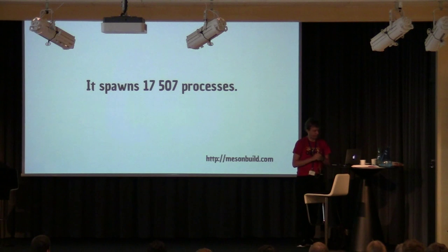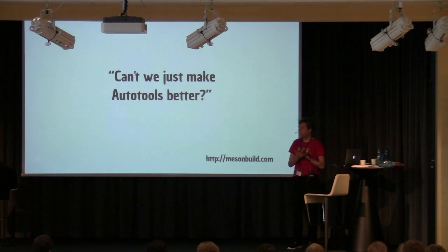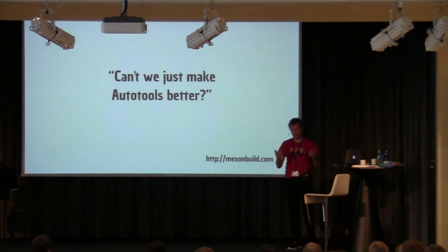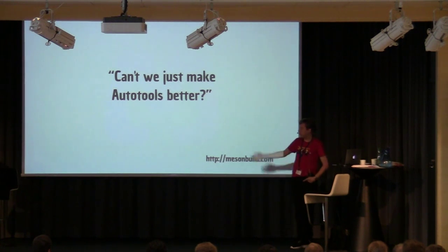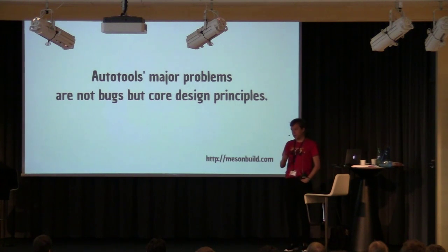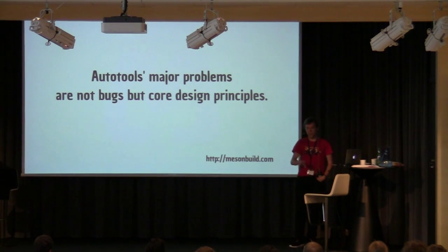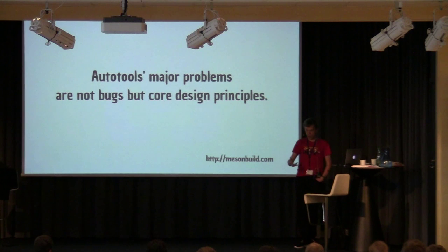As we all know, Unix processes are cheap. The second question is, could we make AutoTools better? There's been lots of time, energy, and effort spent on AutoTools. But the problems it has are not bugs or deficiencies - they are the core design principles the entire system is based on. If you actually wanted to make it better, you'd have to go deep inside and change the core of what it is, and then it wouldn't be the same thing anymore. So you might as well get a fresh start and do something better.